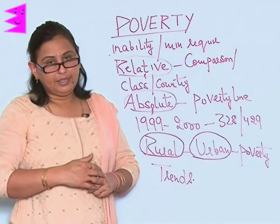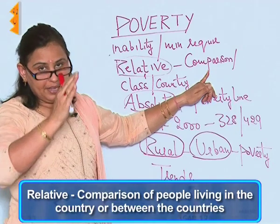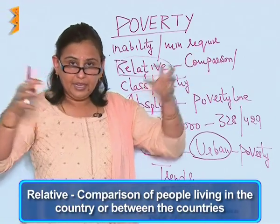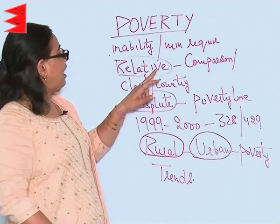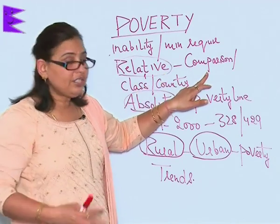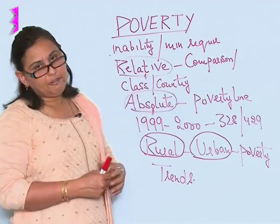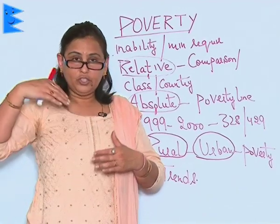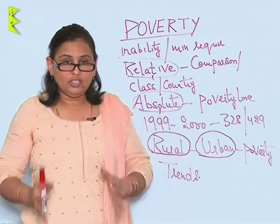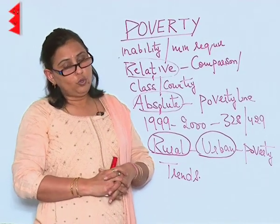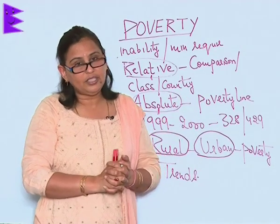Relative poverty means comparison of people living within a country or between countries — between states, between castes, and so on. When we are relatively comparing sections of people in terms of poverty, that is called relative poverty. There will be countries in the poverty zone and those which are not, and sections of people who fall in the poverty category and those who do not.